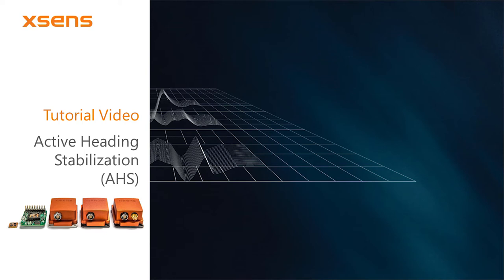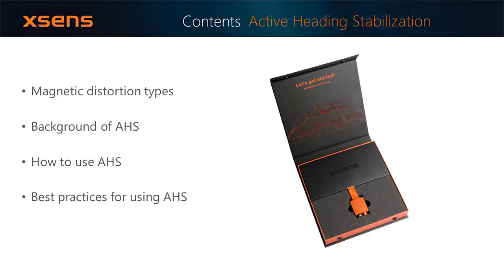This tutorial video introduces Xsense's Active Heading Stabilization Technology, also known as AHS. This feature is available for all Vertical Reference Unit and Attitude Heading Reference System modules. We will start by discussing the effects of magnetic distortions on orientation estimates and how AHS can help compensate for these effects.